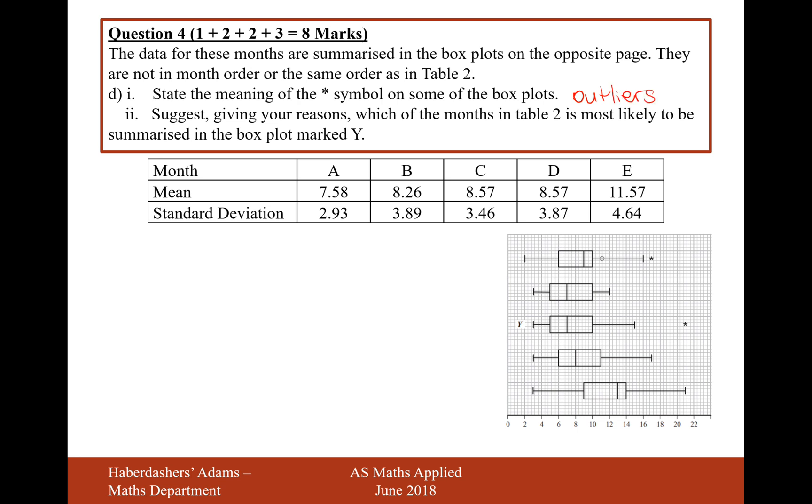So they wouldn't fit in the standard range, but they're just so far away from the mean, and they're only one singular value, that we don't include them in the main whisker. Part 2, it suggests giving a reason which of your months from table 2 is most likely to be summarized by the box plot Y.